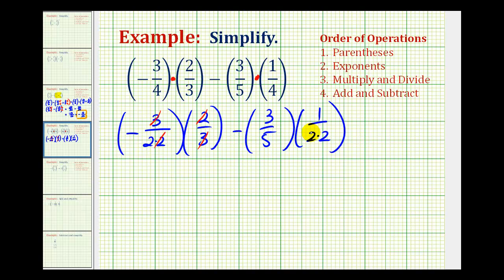Notice in the second product nothing simplifies. So for this first product we have a negative times a positive, that's negative. We have a one in the numerator and a two in the denominator minus here we have three in the numerator. And our denominator would be five times four which is twenty.